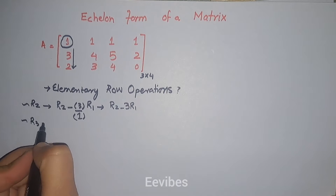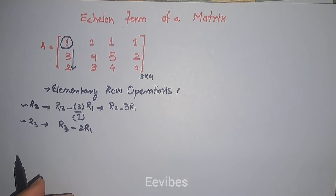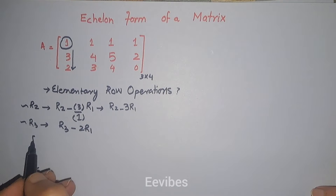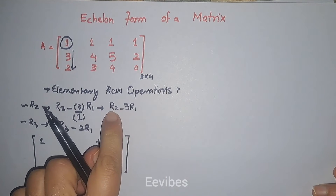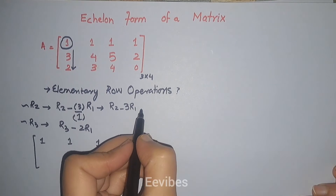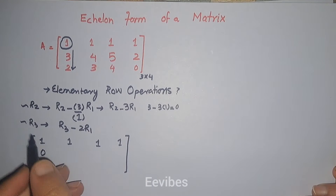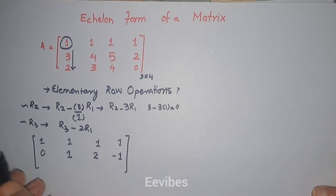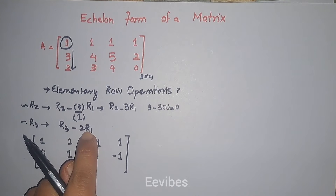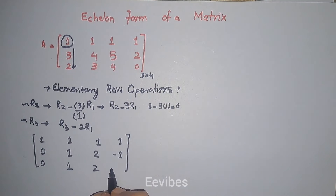Similarly, the change in R3 is R3 minus two times R1. The first row remains unaffected. Performing R2 minus three times R1: three minus three times one gives zero, four minus three gives one, five minus three gives two, and two minus three gives minus one. Performing R3 minus two times R1: three minus two gives one, four minus two gives two, while zero minus two gives minus two.